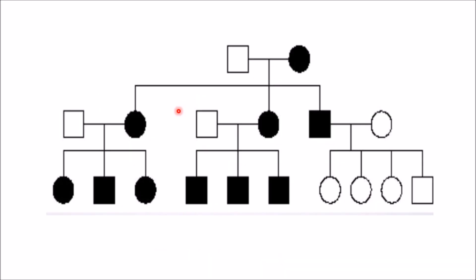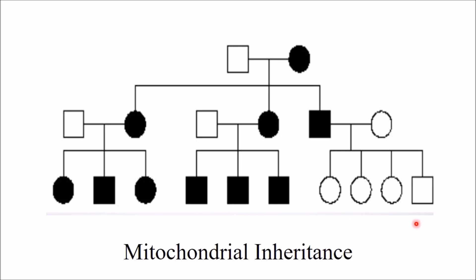In this example, the affected female transmits the trait to all her daughters and sons across generations. However, when the male is affected, he does not transfer any traits to his daughters or sons. Therefore this inheritance pattern is mitochondrial inheritance.